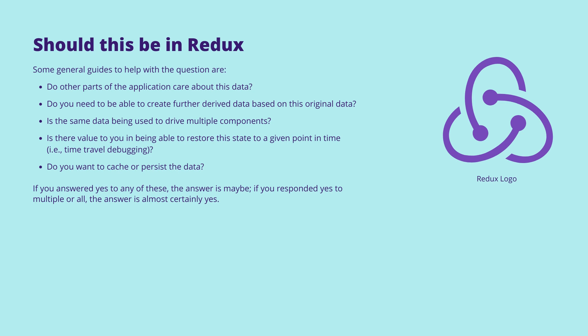One of the most common pitfalls in Redux is putting too much in the store, as it's designed for global and application-level state, not the entire state — and this is a really delicate balance. Overuse can cause performance problems, and would cause significant overhead when creating otherwise simple features. Some general guides: do multiple parts of the application need to care about this data? Do we need to create further derived data based on the original, such as generating multiple to-do lists from a single global list? Is this data being used to drive multiple components? Is there value in time travel debugging? Do you want to cache or persist this data? If you answered yes to any of these, the answer is maybe. If you answered yes to multiple or all of them, the answer is almost certainly yes.